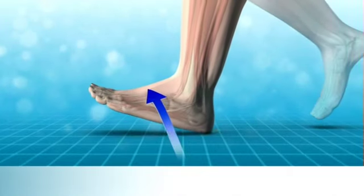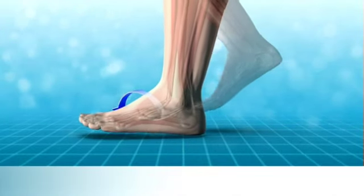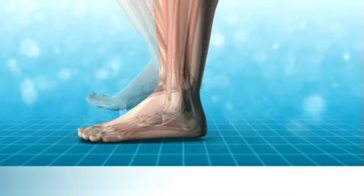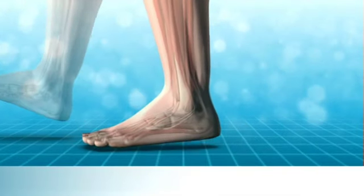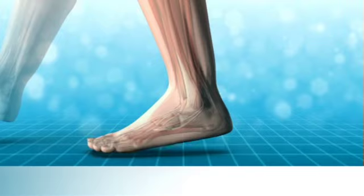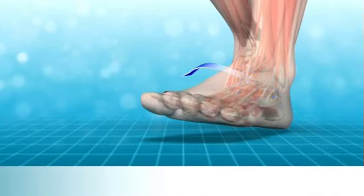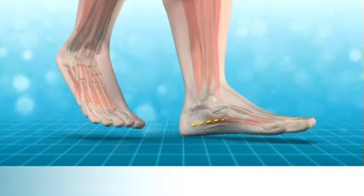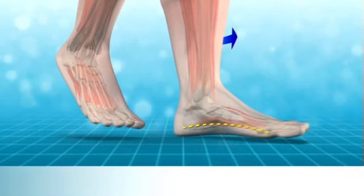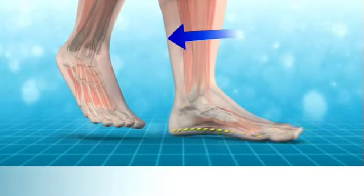Pronation is a normal part of walking that happens every time we take a step. It is the movement that occurs during the period from the heel hitting the ground to the foot being flat on the ground. During pronation, the foot rolls over, the height of the arch is lowered, and the leg rotates inwards as the foot moves towards its inside edge.